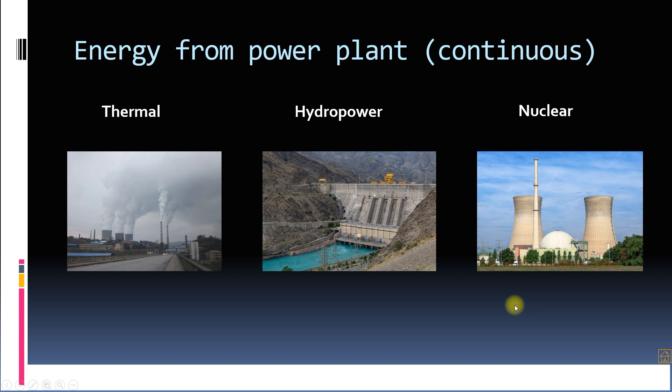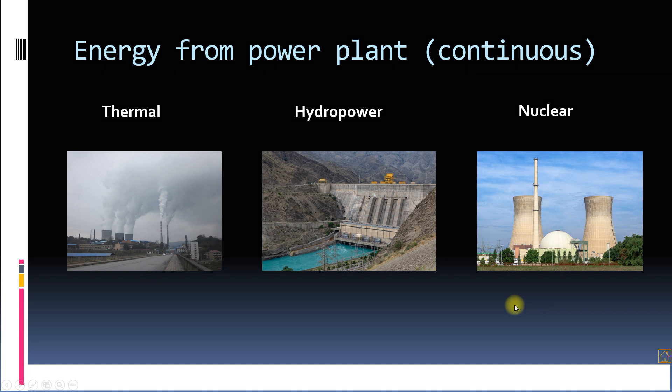Now how much energy is generated from these one megawatt power plants? To know the energy generated by these power plants we must know how many hours these are run at rated capacity. These continuous power plants can generate 24 megawatt hours of electricity per day if run for 24 hours.